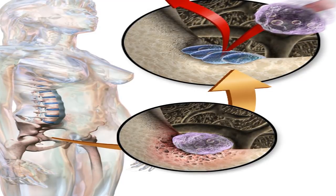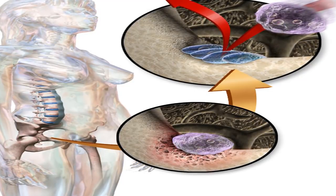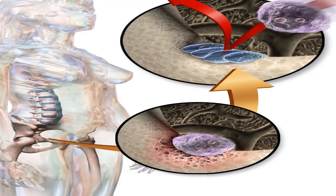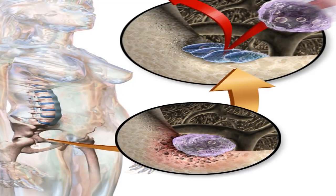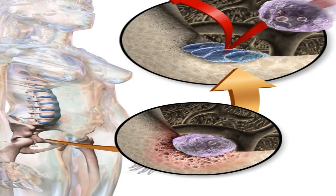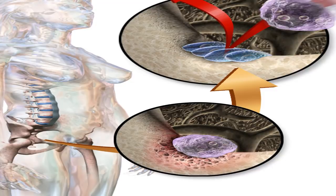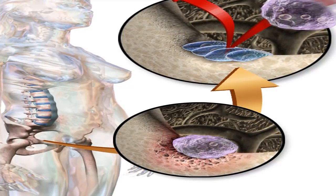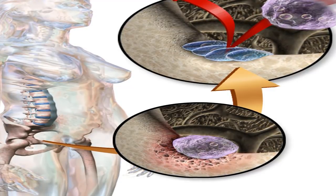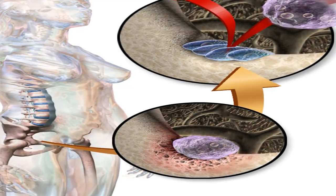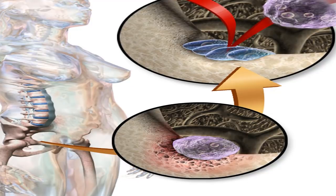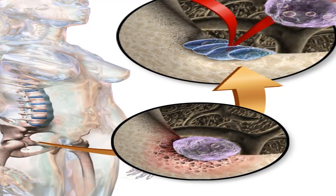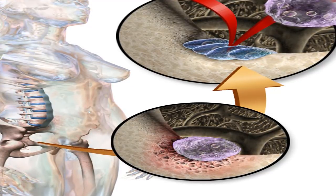Nursing home care: all too often, hip fractures can lead to long-term care in nursing homes. People who are bedridden are subject to cardiovascular complications, more exposed to infectious diseases, and susceptible to various other complications.